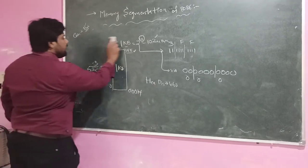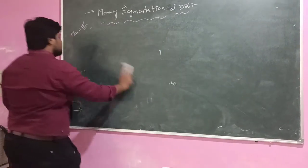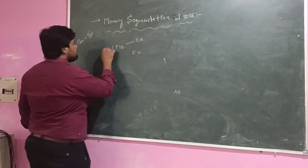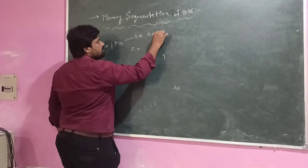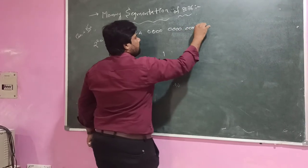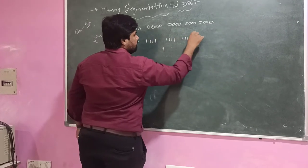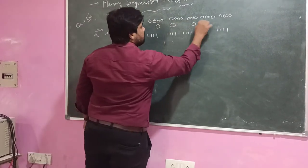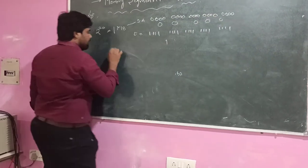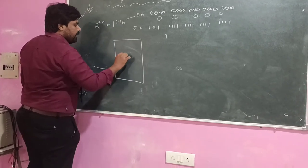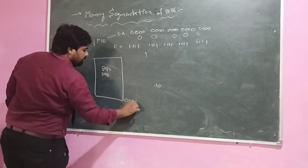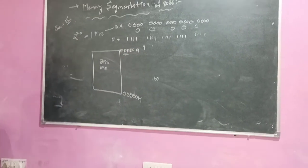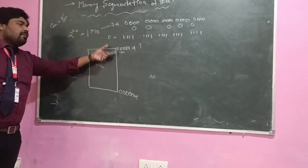Coming to the 8086, the maximum storage capacity is 1MB. To calculate the starting and ending addresses: 1MB means 2 power 20, take 20 zeros for starting address and 20 ones for ending address. The starting address of 1MB memory is 00000H and the ending address is FFFFFH. This is the addressing range of the 1MB memory of the 8086.